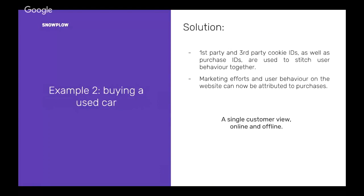Because you have the first- and third-party cookie IDs as well as the purchase ID, you're able to stitch that user behavior together — going from all the research a user has done online to that in-store purchase, and then calculating how much you've spent to get this user, how to optimize how your website works, how you structure information about cars on the site to drive better purchasing decisions, to help people find what they're looking for faster, and ultimately to make them come into your shops and buy their dream car. This is a nice example of how having a single customer view — online and offline — can make the whole purchasing decision better not only for the dealership but also for users who can interact with the product better.